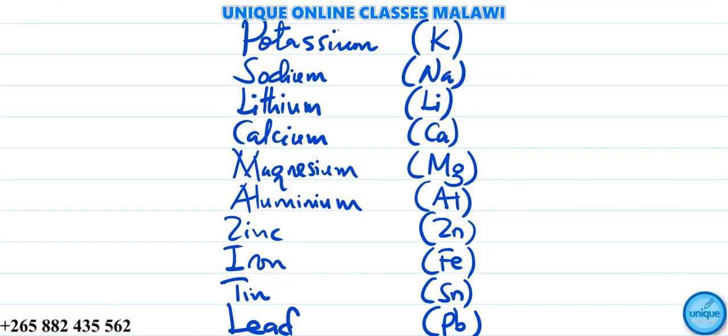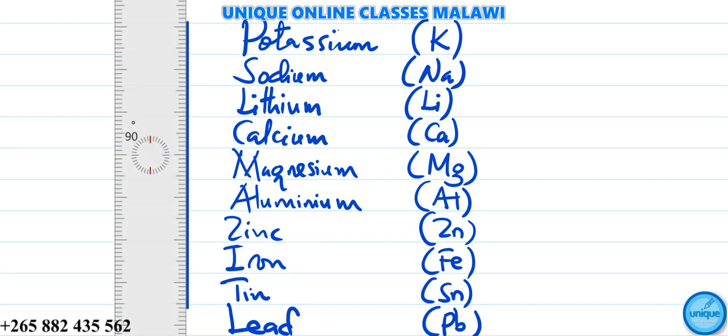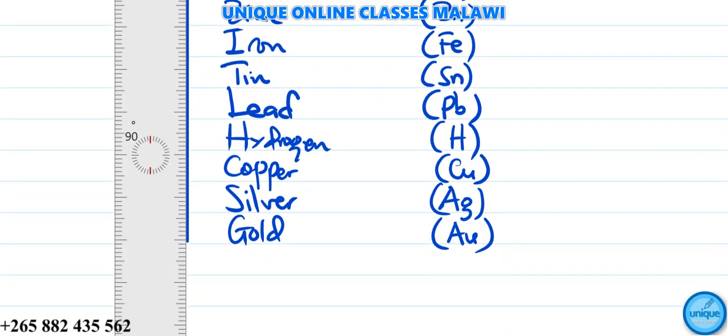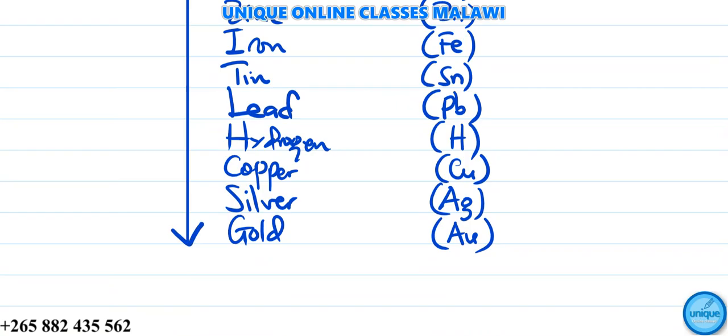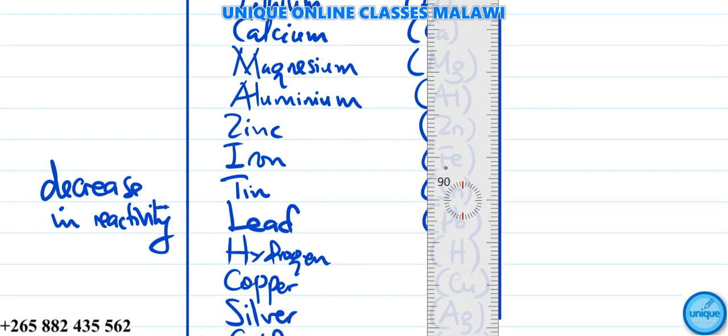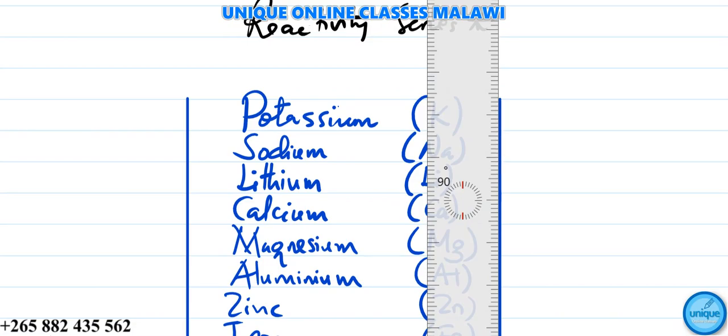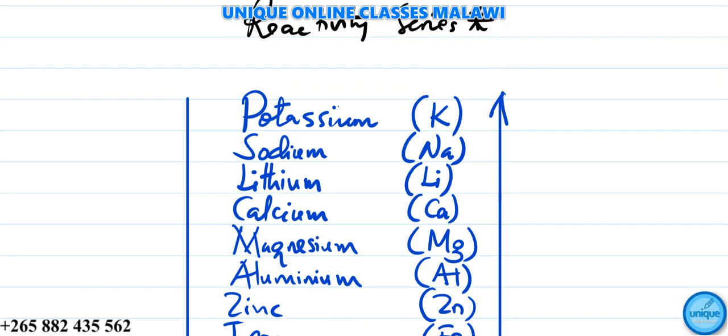I've arranged it in descending order. If I draw a straight line going downwards, and another vertical line going upward like this, you can see the increase in reactivity going upward.